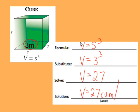The answer is 27 cubic meters. You can write it either way. With volume, it's very important that our labels be in cubic units.